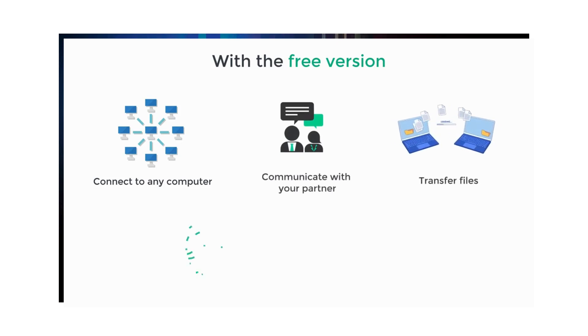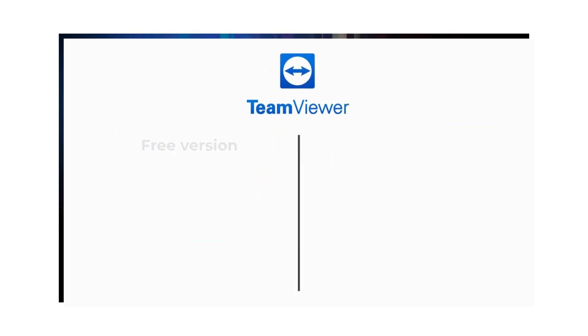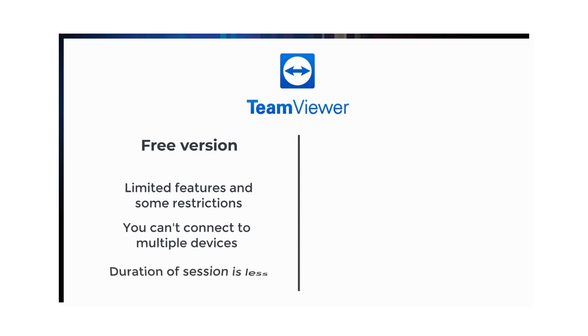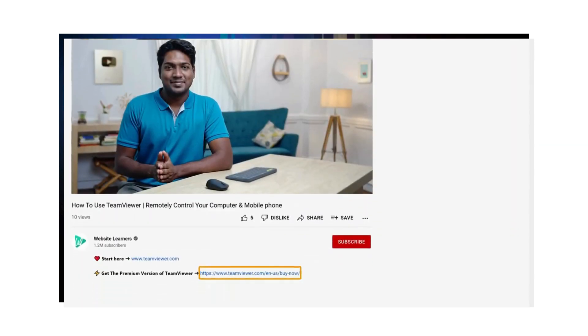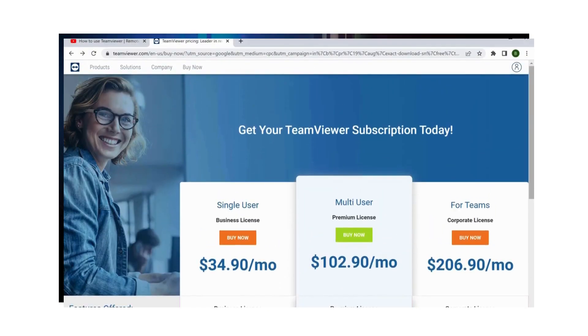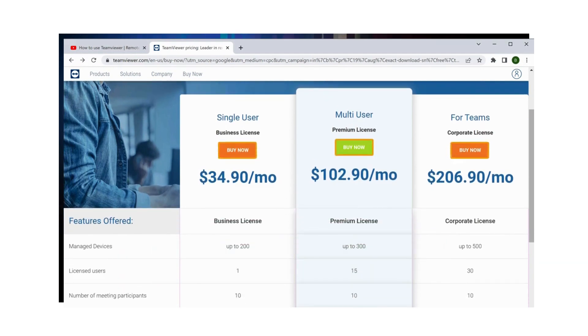If you're using TeamViewer for your personal work, you can continue using the free version of TeamViewer. With the free version, you can connect to any computer, communicate with your partner at the other end, transfer files, set up unattended access, and connect to your mobile phone. But if you want to use TeamViewer for your business, the free version has limited features and some restrictions — you can't connect to multiple devices and the duration of your session is less. If you want more features like remotely turning on your computer, keeping your sessions hidden, and unlimited session time, you can get the premium version of TeamViewer by purchasing a subscription. Just click the link below this video and it'll take you to the page with different plans. You can choose any plan based on your business and click Buy Now to purchase the subscription.